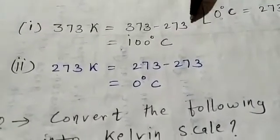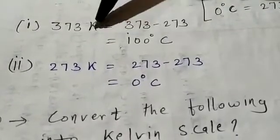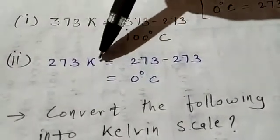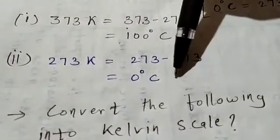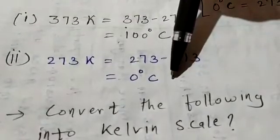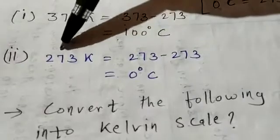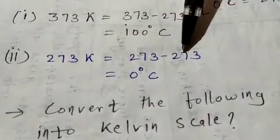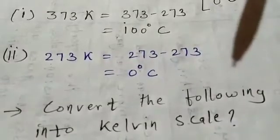You will solve and show it — you will not directly write the answer. Second: 273 Kelvin, you have to convert to Celsius scale. So what will you do? You will take the difference: 273 minus 273. So, how much? 0 degree Celsius.